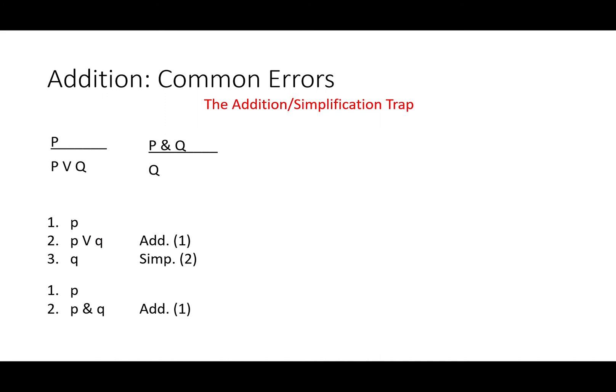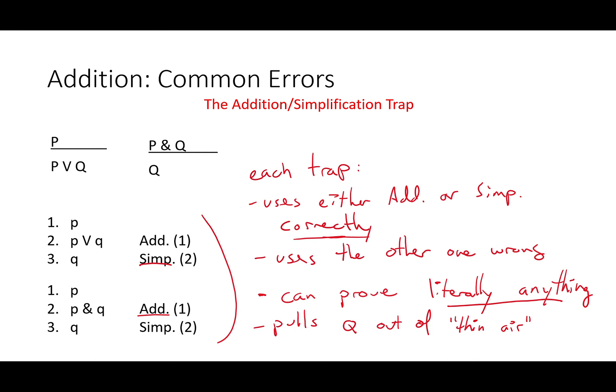P. This time our mistake is with addition: P and Q. Well, we can't use addition to introduce a conjunction. Simplification is used correctly, but the damage is done. P doesn't entail P and Q. Both of these traps would allow you to prove literally anything. Of course, logic isn't about proving literally anything. It's about proving only those things which are entailed by your starting premises. You don't want to be able to pull Q out of thin air.